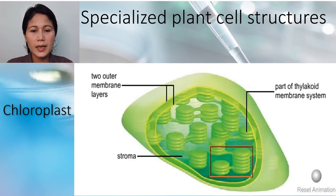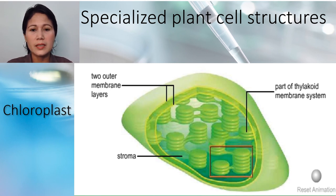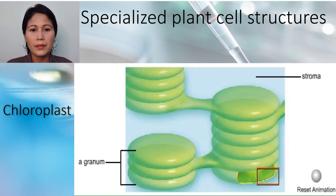Another specialized plant cell structure is the chloroplast. This is a cutaway view of a chloroplast. Two outer membrane layers enclose a largely fluid interior called the stroma. The thylakoid membrane system weaves through the stroma and is folded into a system of interconnecting disc-shaped compartments.